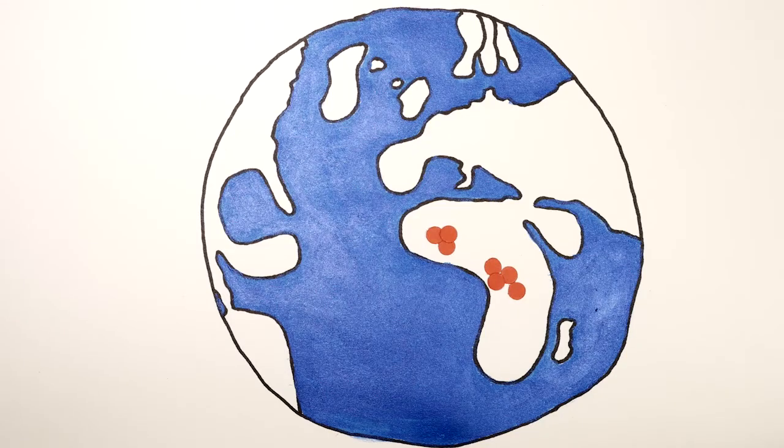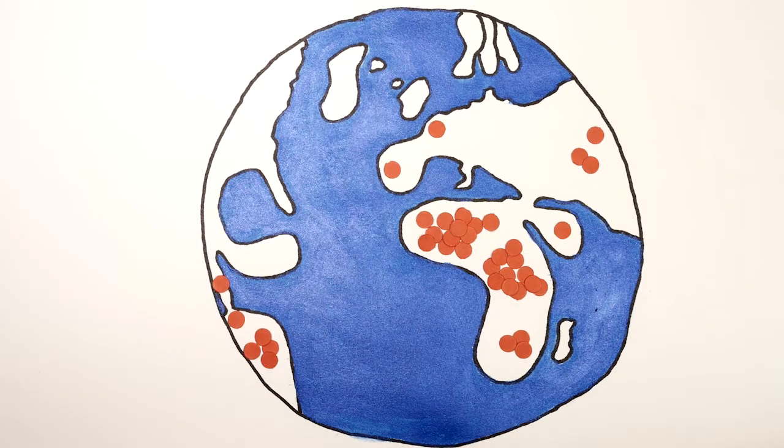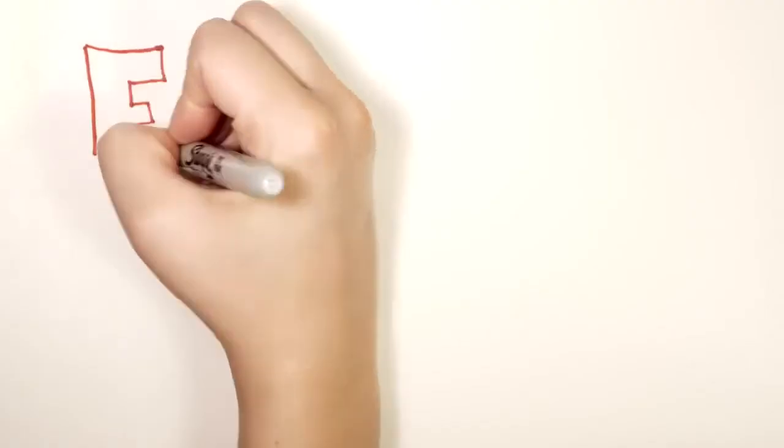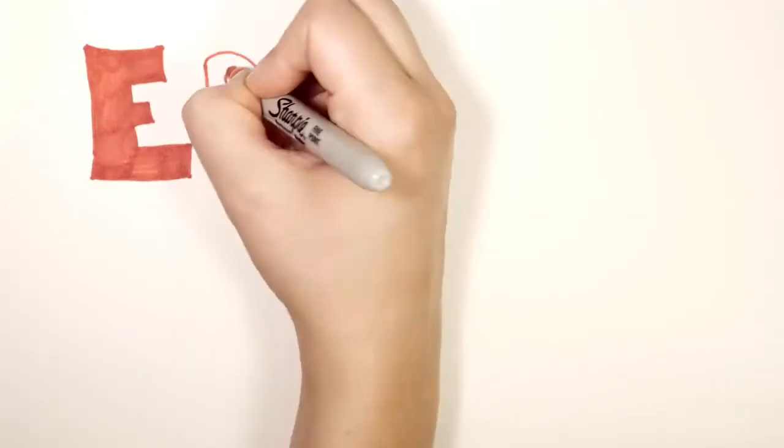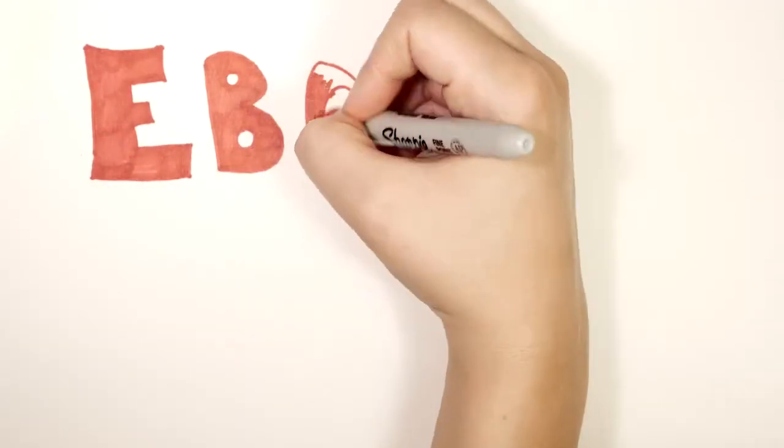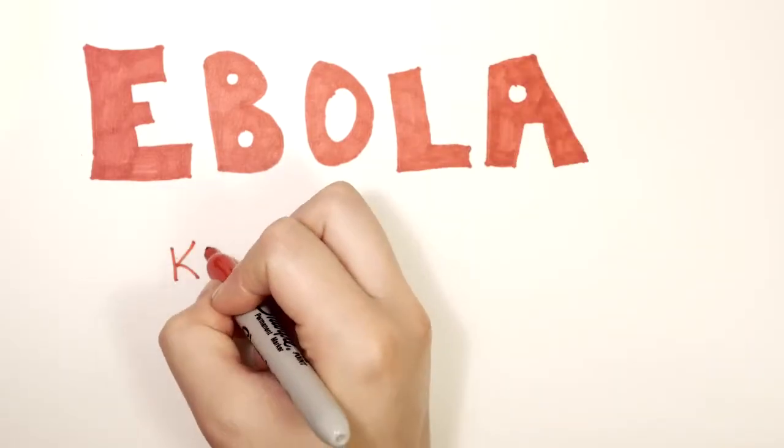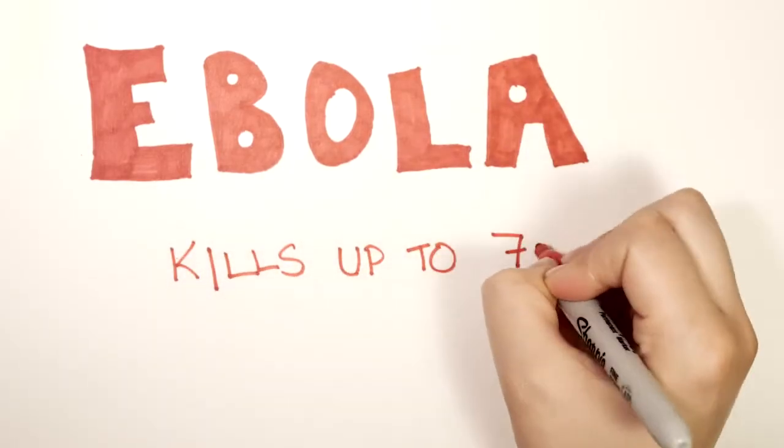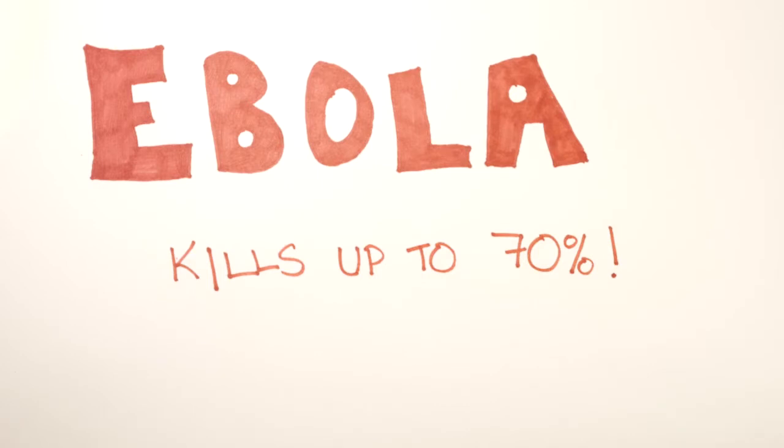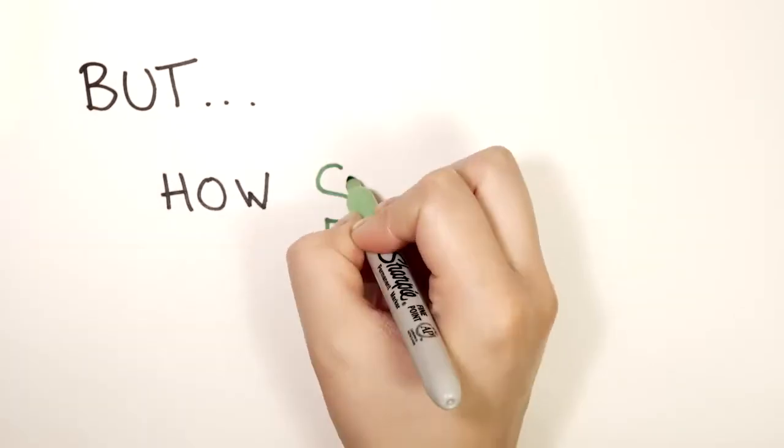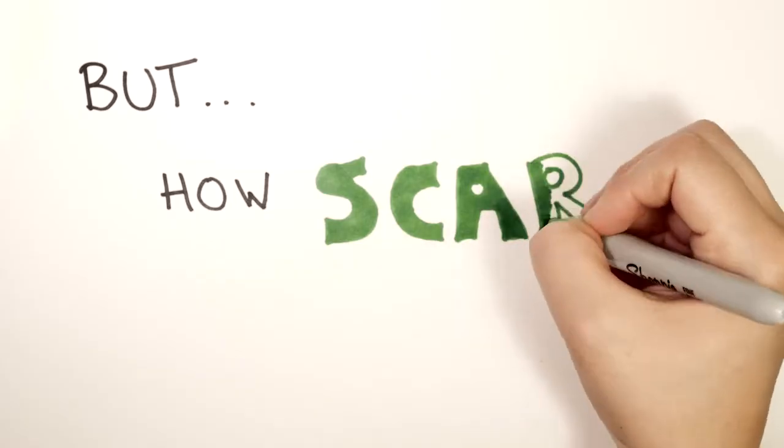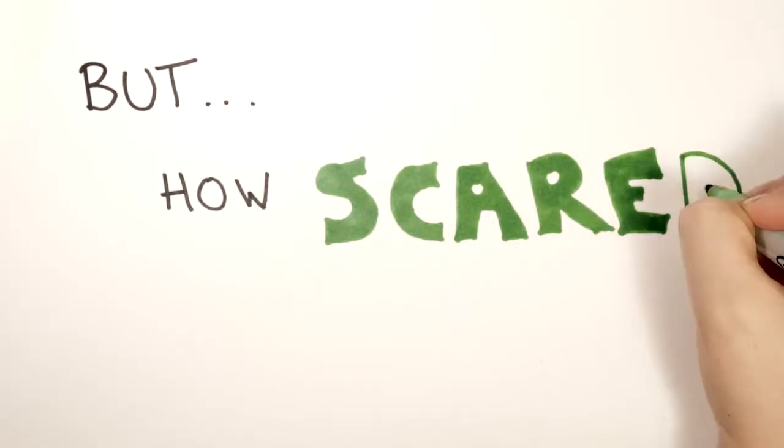Infectious diseases can be terrifying because of how fast they can spread. Ebola is an emerging infectious disease that everyone's been worried about. Some species of Ebola virus can kill 70% of the people they infect. It's a terrible disease. But how contagious is Ebola actually, and how scared should people be about catching the disease?